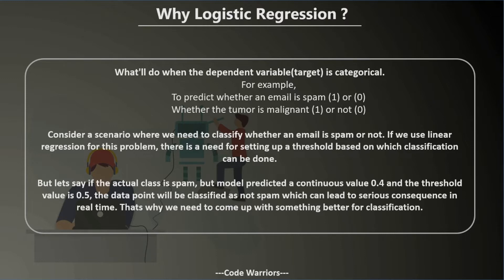For example, if you want to predict whether an email is spam or not, or whether a tumor is malignant or not. If you try to solve a classification problem using a regression model, you will face various problems. First, you need to set a threshold value — say 0.5 — treating values below it as 0 and above as 1. But the model might predict 0.4 and classify a spam email as not spam, which is a serious problem.